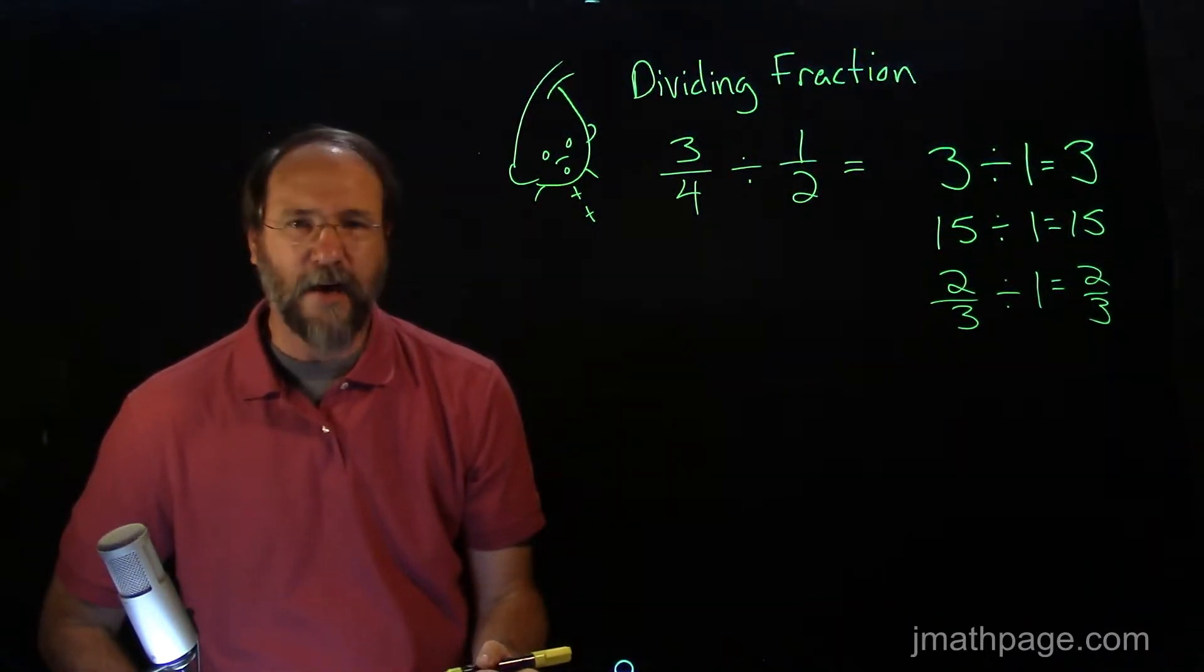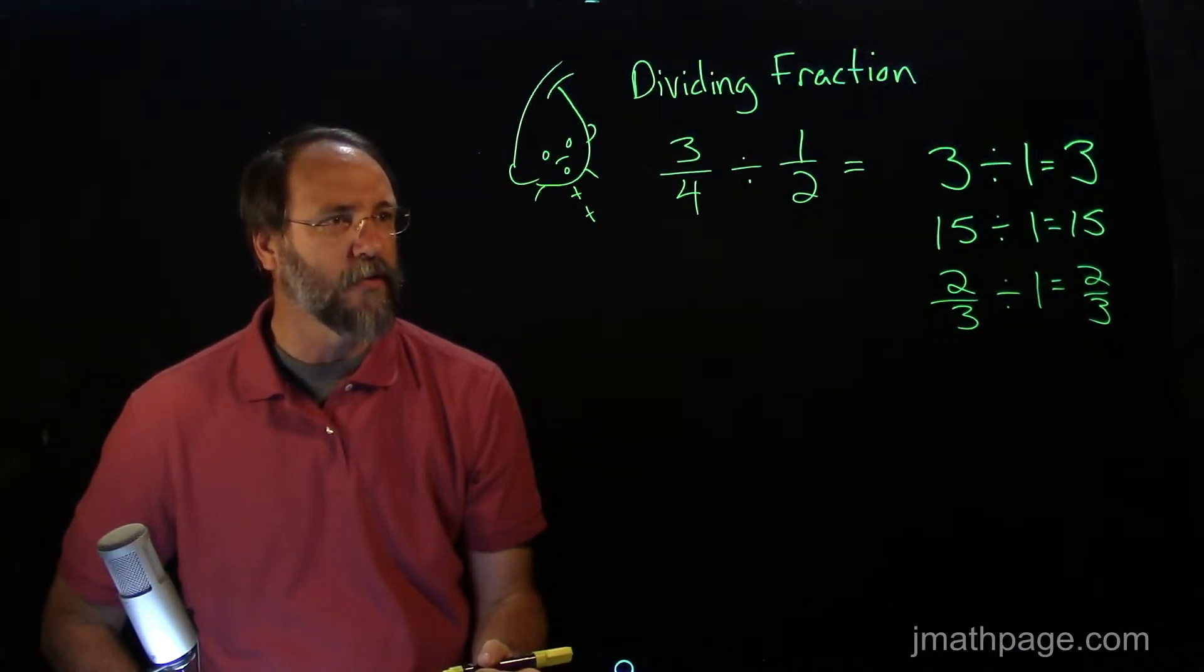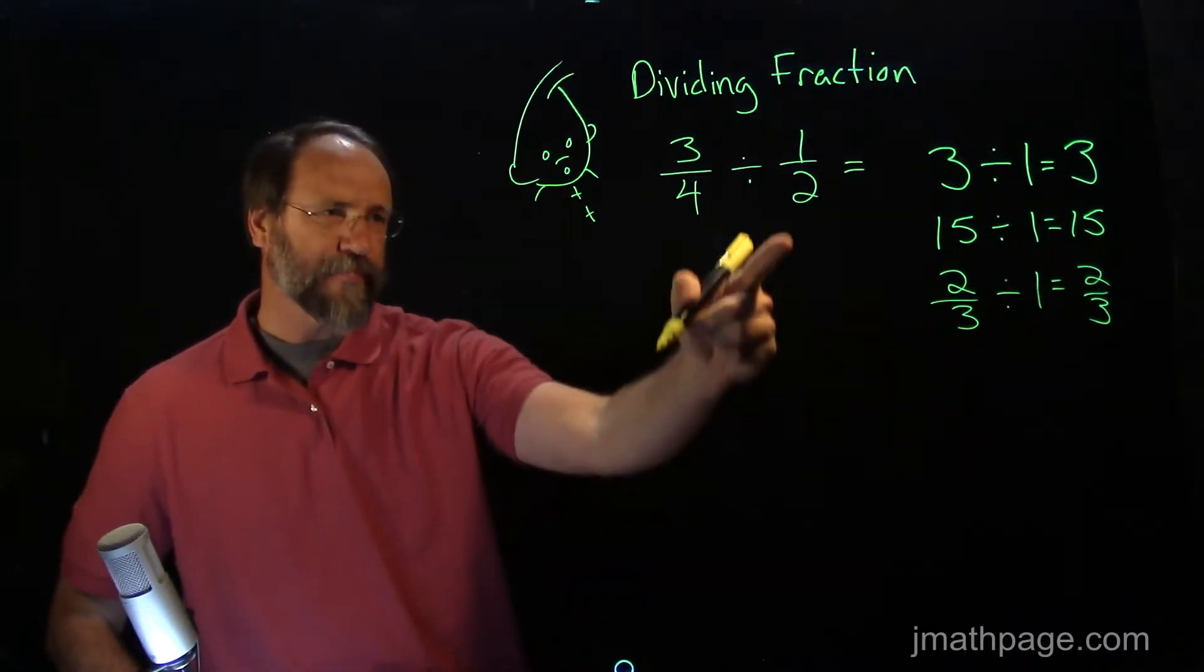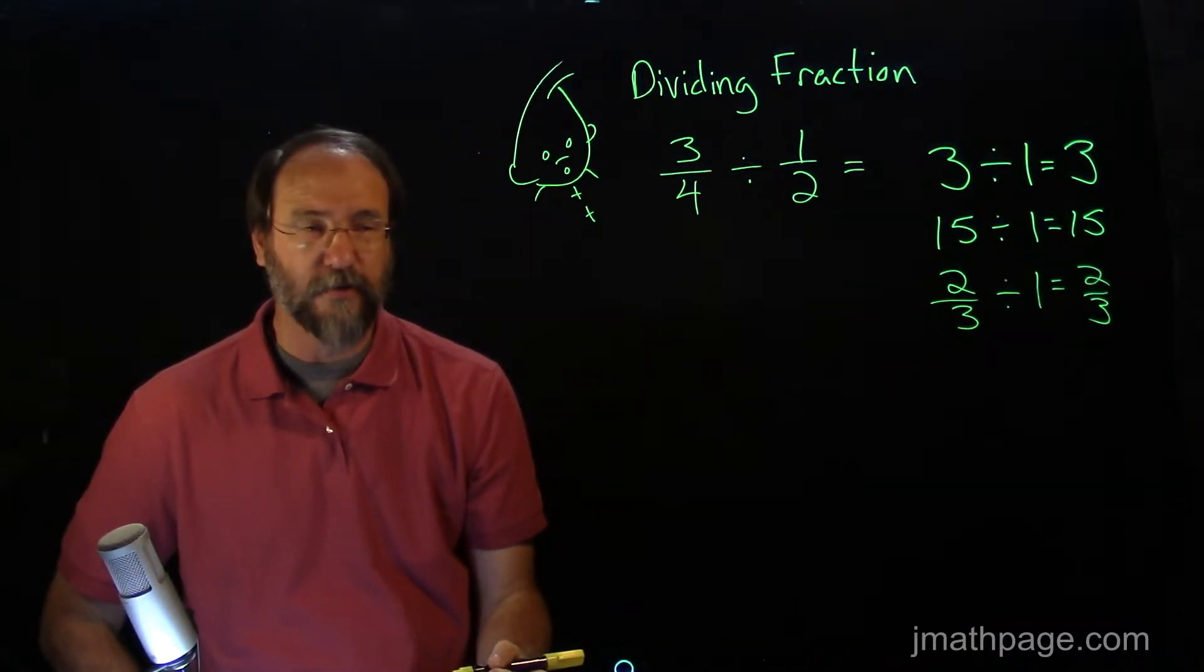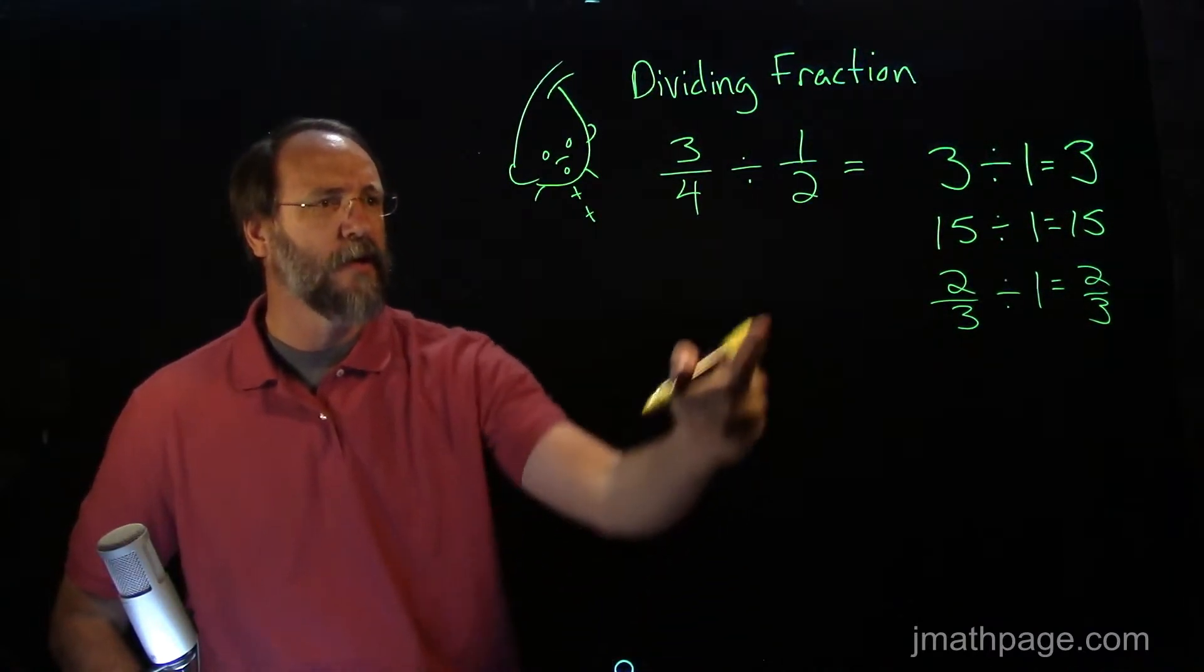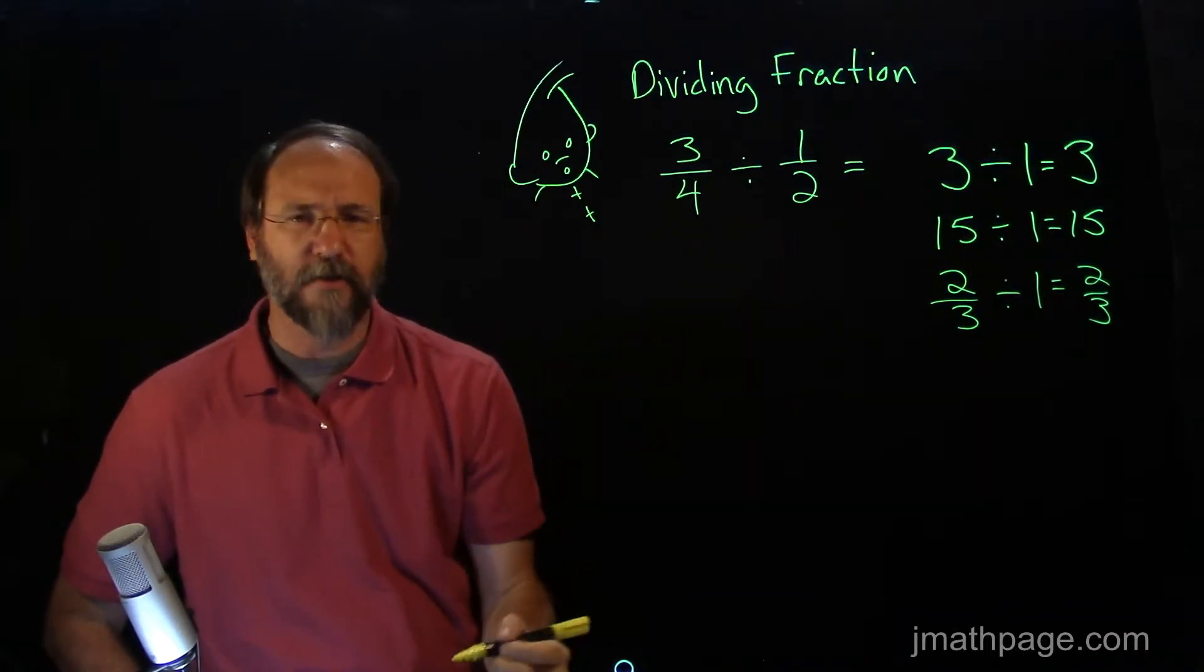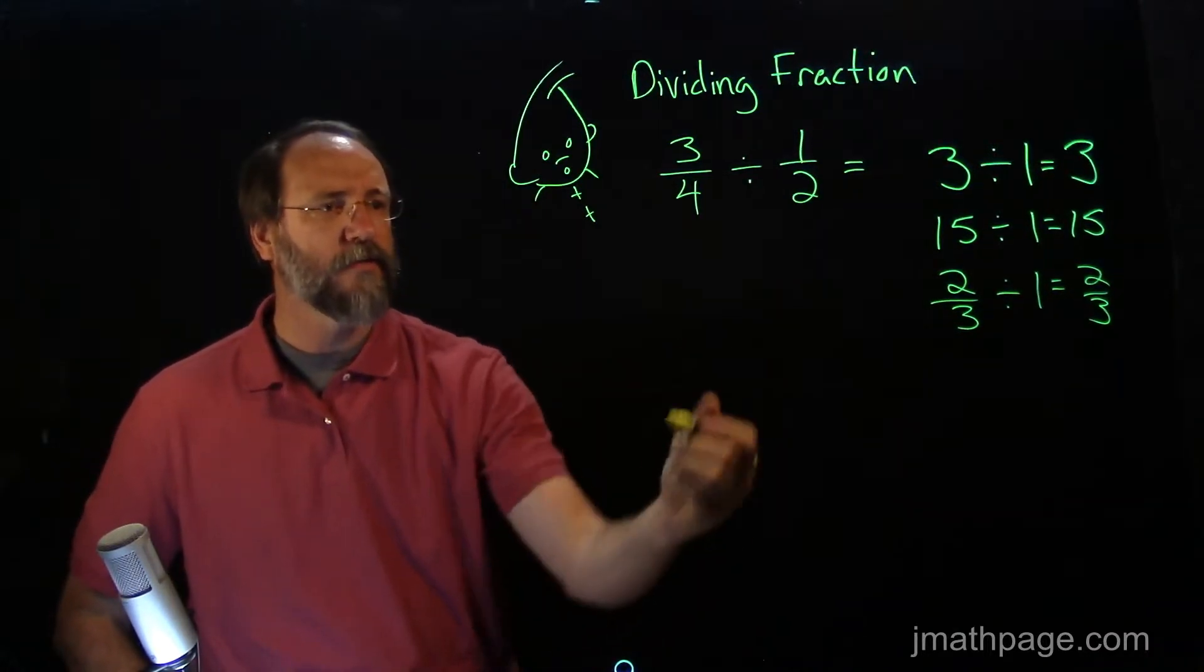So, how can we make this work for us? I'm dividing by a half, but I'd rather be dividing by one. Let's think about what we might do. Well, if I wanted to, I could change this half into a one. But I had to follow some rules and be fair about it. Now, I know that to turn one-half into one, I'd have to double it somehow. Let's do that.